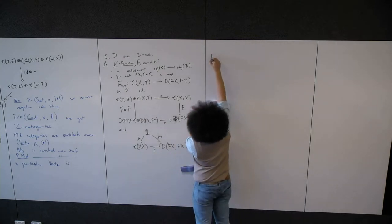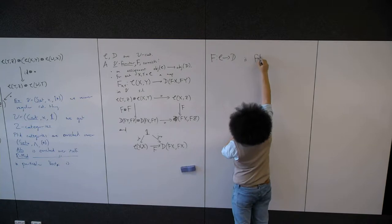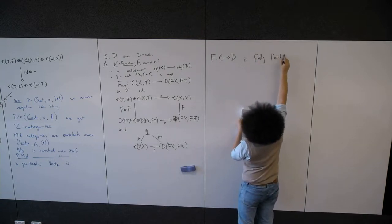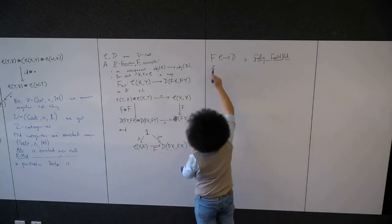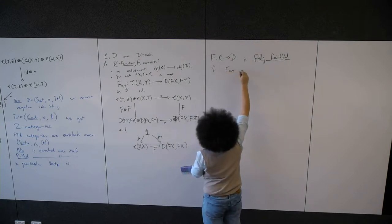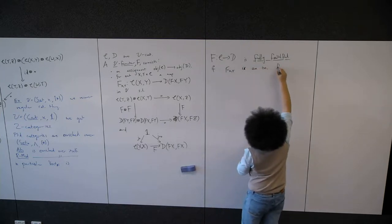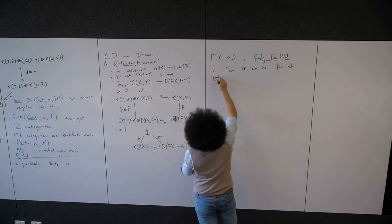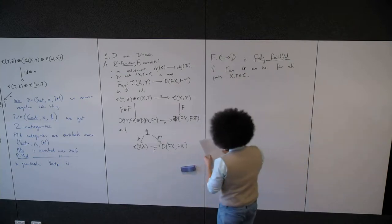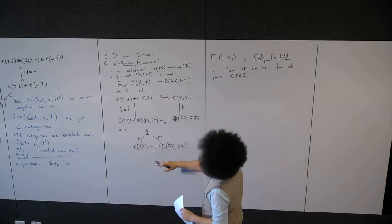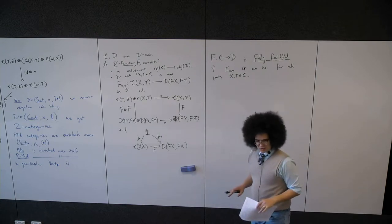That's what it means to be a V-functor. We say that such a functor is fully faithful if the map F_{x,y} from C(x,y) to D(F(x), F(y)) is an isomorphism for all pairs x, y. So we have categories, we have functors, and now we need natural transformations — and then we've written down the things that category theory was supposed to talk about.